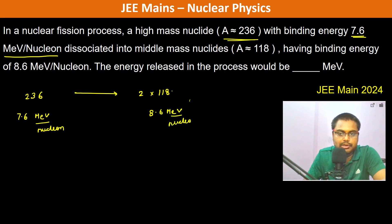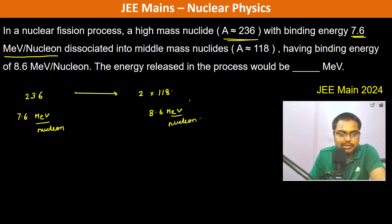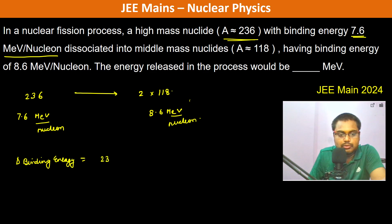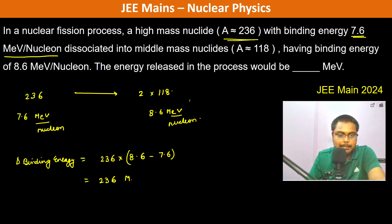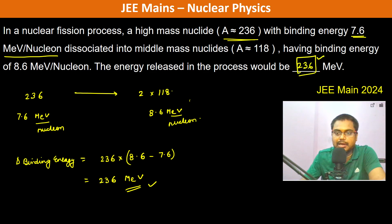The energy released in the process is determined by the difference in binding energy: 236 × (8.6 − 7.6) = 236 MeV. So the energy released will be 236 mega electron volt.